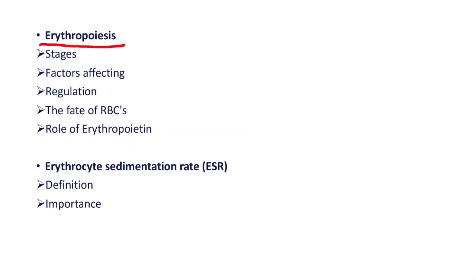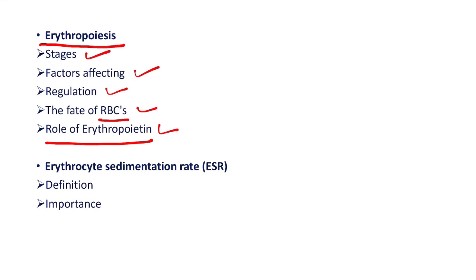Then, erythropoiesis. Here, stages of erythropoiesis, factors affecting erythropoiesis, regulation of erythropoiesis, fate of the RBCs, and role of erythropoietin — these can be the questions.